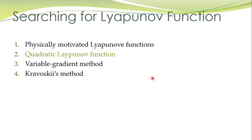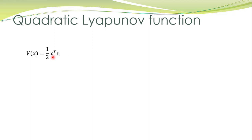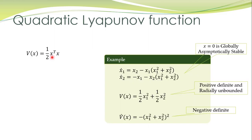The second strategy for selection of a candidate Lyapunov function is to take a quadratic Lyapunov function — this is actually the most frequently utilized approach. The quadratic Lyapunov function is given by V = (1/2) x^T x, which equals (1/2)(x1² + x2² + ... + xn²). This candidate Lyapunov function works in many cases and is simpler. In many previous examples, we had taken this quadratic Lyapunov function — for instance, for a system described by nonlinear differential equations, we took this quadratic Lyapunov function and it worked.